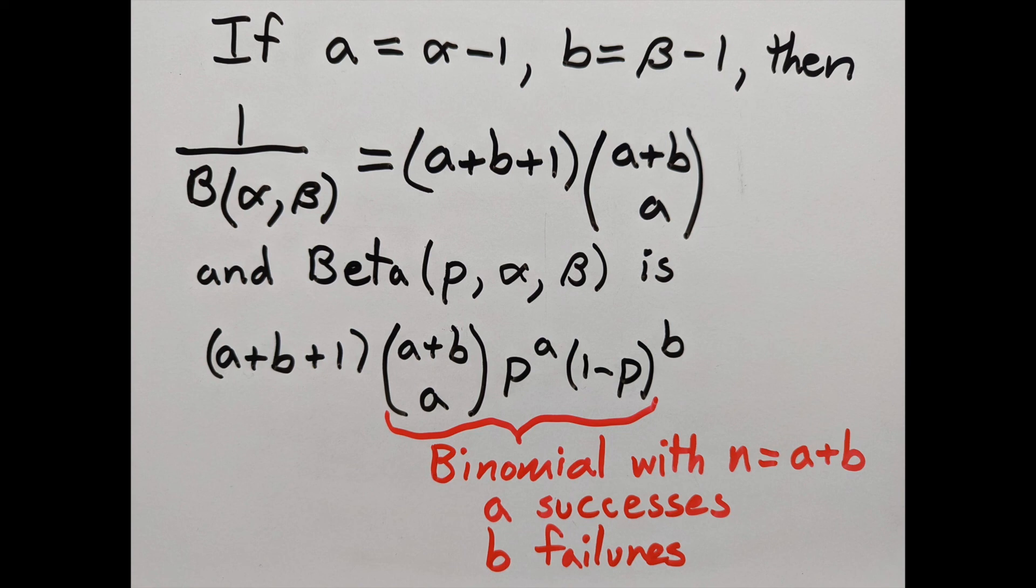But if you multiply by n plus 1, what you get can be read as a continuous distribution, the beta distribution, for the values of p given that you got data of a successes and b failures.